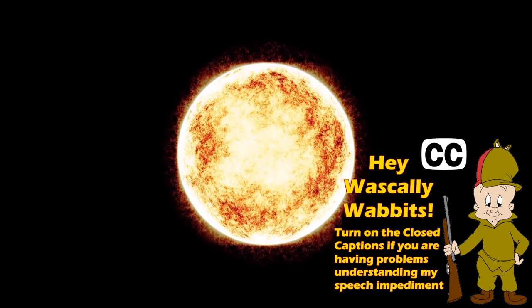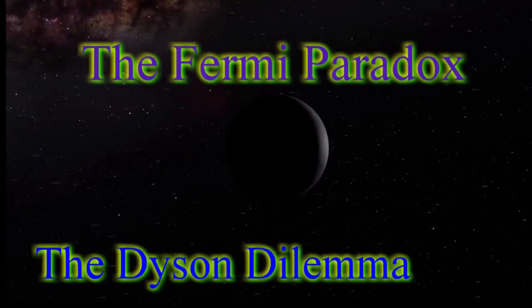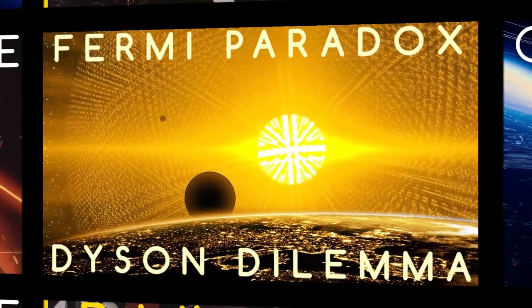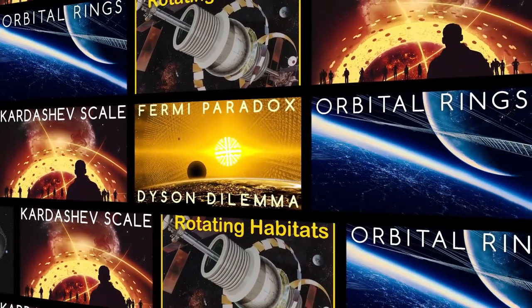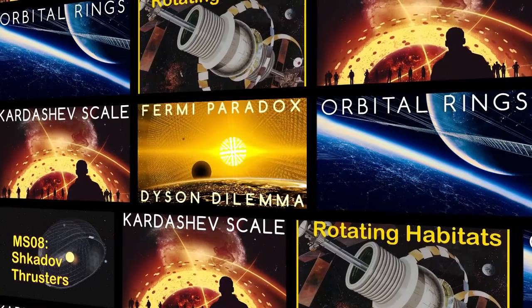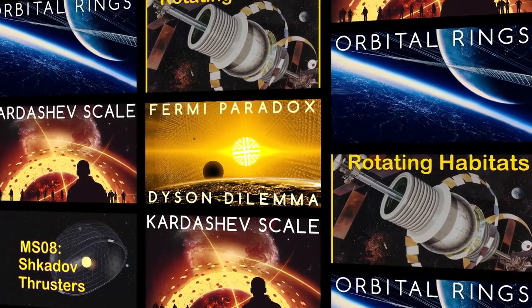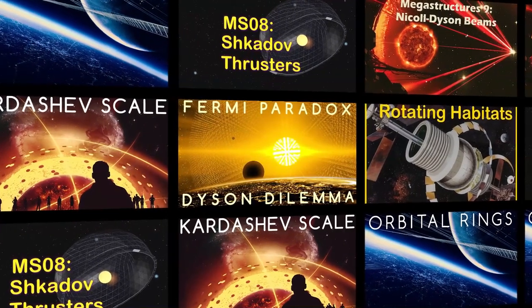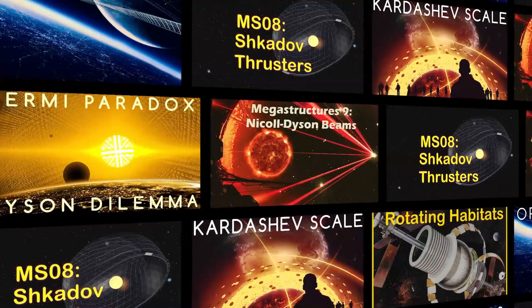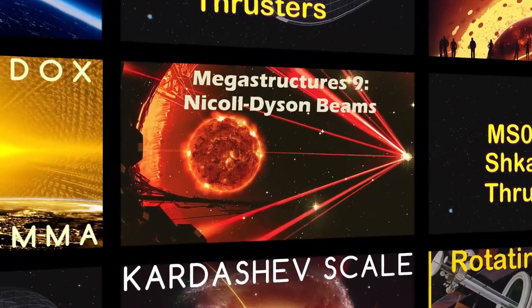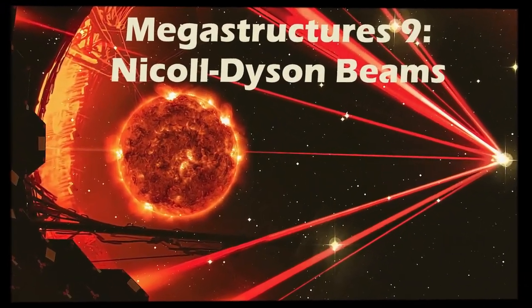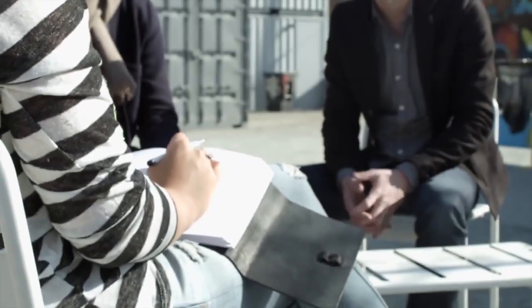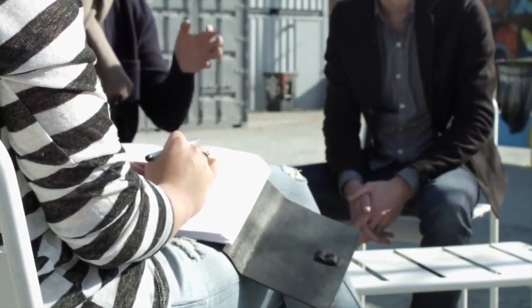We've talked about them in terms of the Fermi Paradox in the Dyson Dilemma, we've talked about them as the basis for Kardashev II civilizations, we've talked about their individual components in terms of other megastructures like rotating habitats and orbital rings, we've talked about special purposes they can be put to, like moving a star via a Shkadov thruster or using one to toast planets thousands of light years away in the Nicoll-Dyson Beams episode, but we've never sat down and just discussed it in a dedicated fashion.